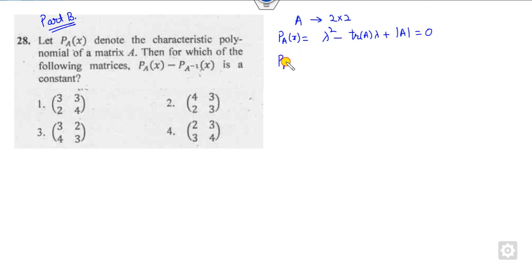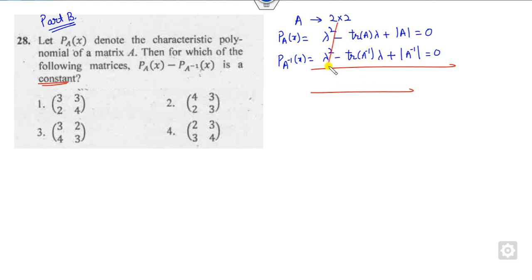What is the characteristic polynomial of A inverse? It is again the same form, but here the trace will be trace(A inverse) and plus determinant of A inverse. Now, which of the following is constant? The difference will be cancelled out. It is constant only when the coefficient here and the coefficient there are equal.